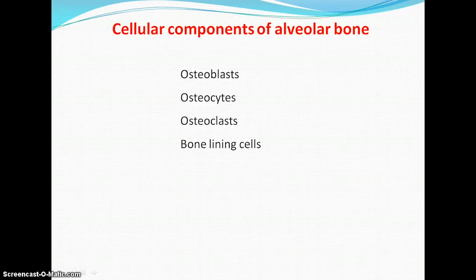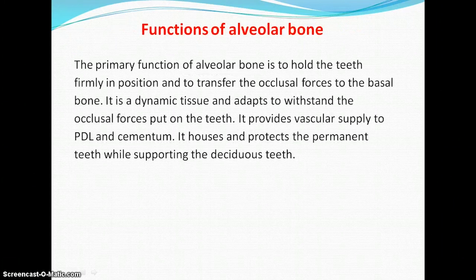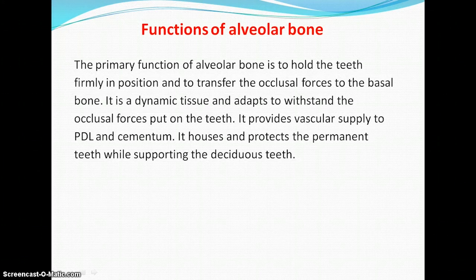The primary function of alveolar bone is to hold the teeth firmly in position and to transfer occlusal forces to the basal bone. It is a dynamic tissue that adapts to withstand the occlusal forces put on teeth. It also provides vascular supply to the periodontal ligament and cementum and houses and protects the permanent teeth while supporting the deciduous teeth.